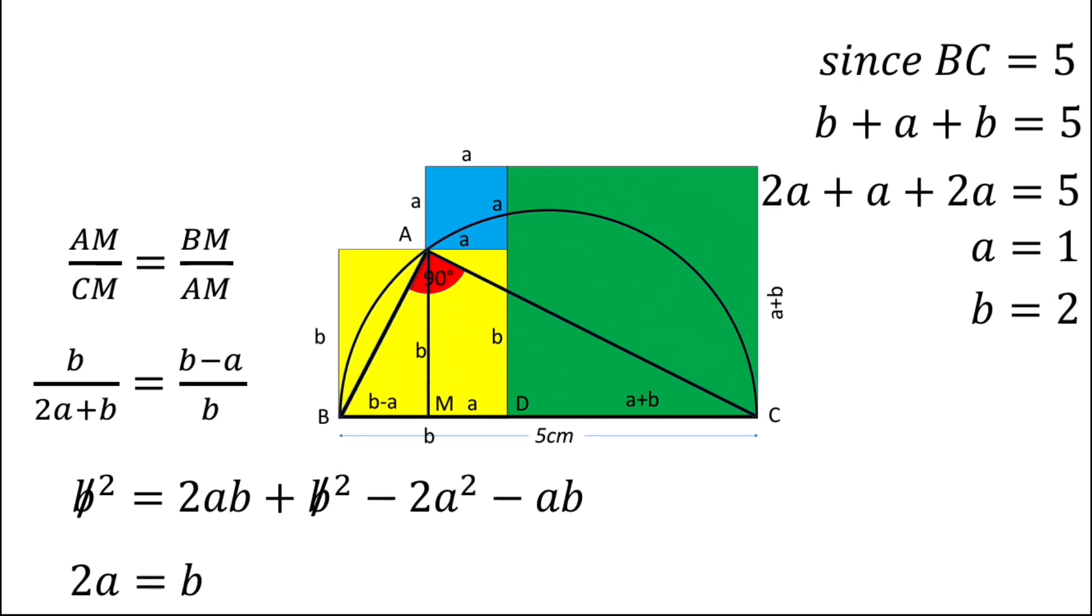So that's how we can find the sides of squares. Blue color square has side 1, yellow color square has side 2, and the green color square will have side 1 plus 2, that is 3.